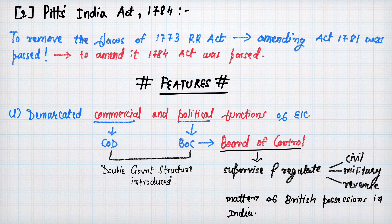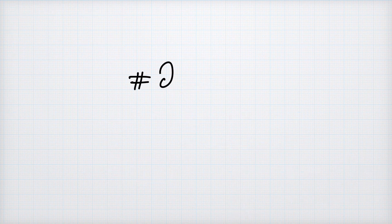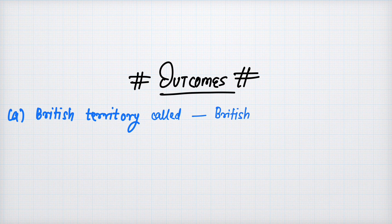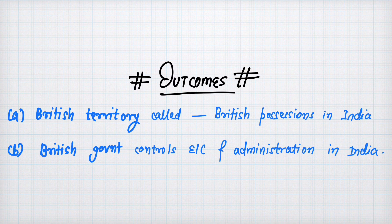A Board of Control was created to look after the political functions of the East India Company. The Board of Control supervised and regulated civil, military, and revenue matters of British possessions in India. As an outcome, British territories were now called 'British possessions in India,' and the British government took full control over the East India Company and administration in India.